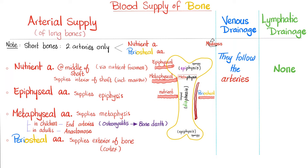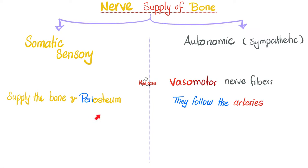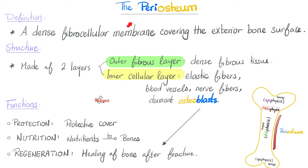The arterial supply includes the epiphyseal artery, metaphyseal artery, and periosteal artery, which supplies the exterior part of the bone including the periosteum. So your periosteum helps nourish your bones. The periosteum also has nerve endings, particularly somatic sensory fibers that are very sensitive to pain.